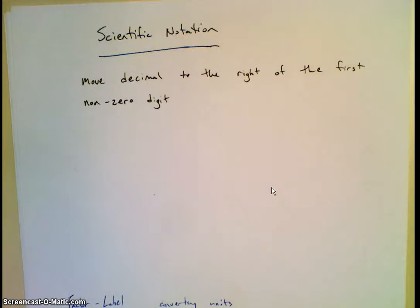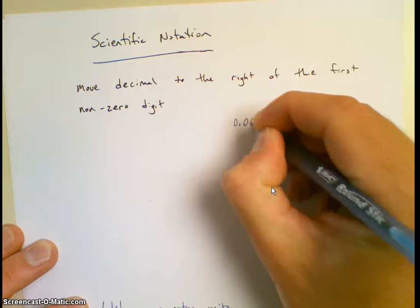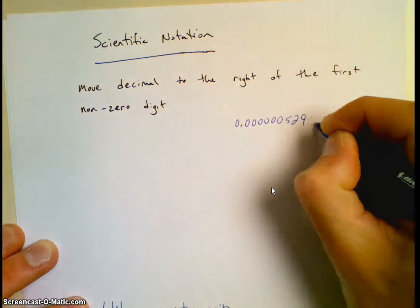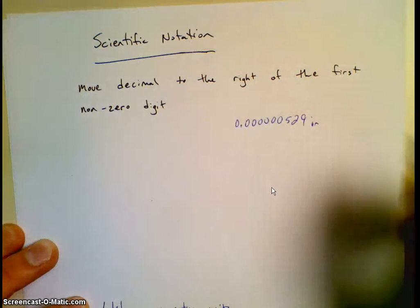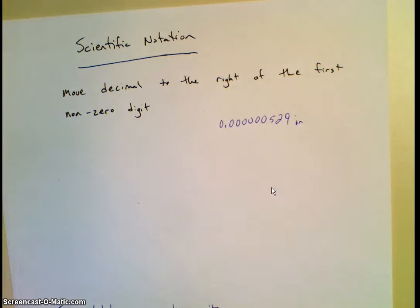Okay, so today's lesson is on scientific notation. The reason why we use scientific notation is so that if we have very large numbers or very small numbers, we want to be able to express them in a condensed method. For example, if I have a number that's like 0.000000529 inches, that number would be difficult to tell somebody over the phone.